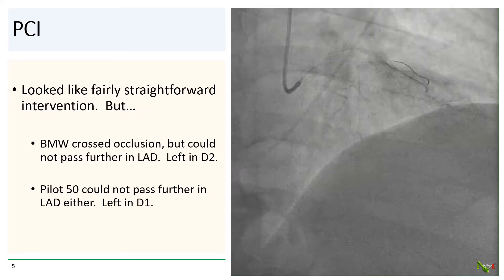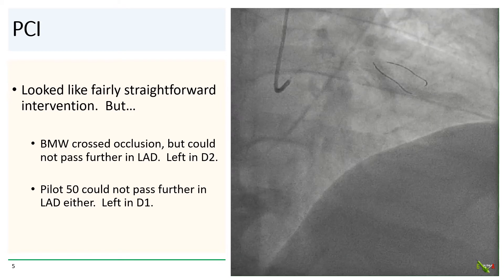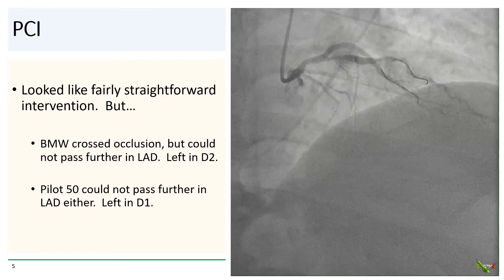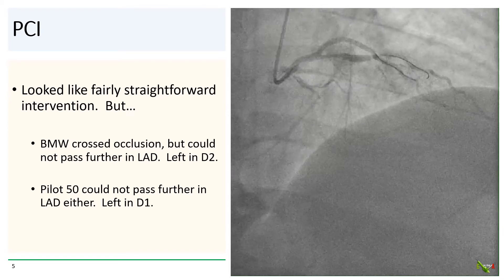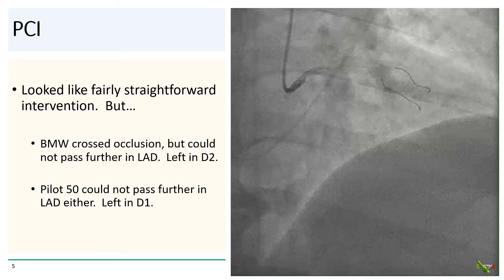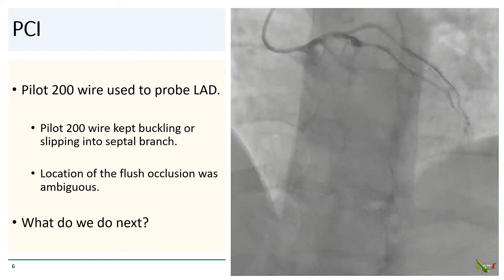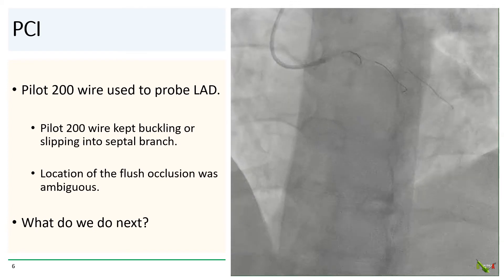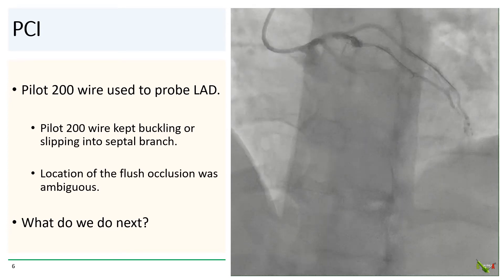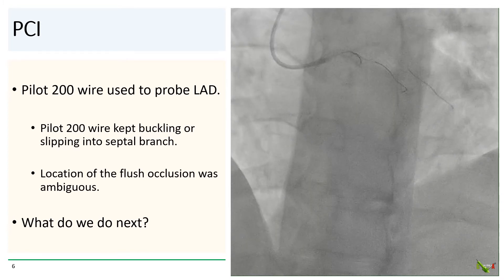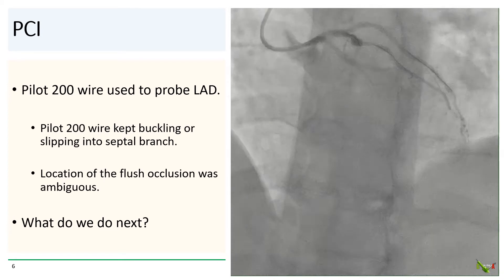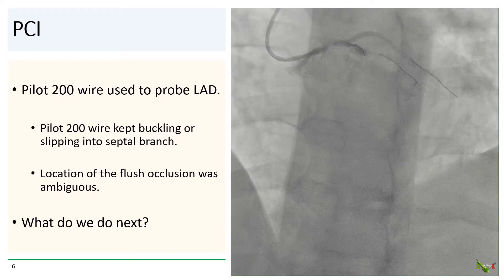We went to work on the LAD in what we thought was going to be a fairly straightforward intervention. The workhorse BMW wire crossed the occlusion easily, but kept being directed into a diagonal branch and could not pass more distally into the LAD, so it was left in D2. We tried a more hydrophilic pilot 50 wire, but that could not pass more distally into the LAD either. We switched to a heavier pilot 200 wire, thinking that the mid-LAD lesion was at least subacute, if not actually a CTO. However, even with the pilot 200 wire, we were not able to enter the occlusion. The location of the start of the occlusion was unclear, and the pilot 200 wire kept buckling or kept sliding into the septal or diagonal branches.